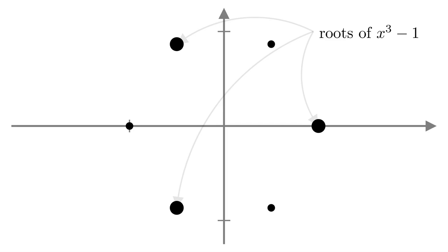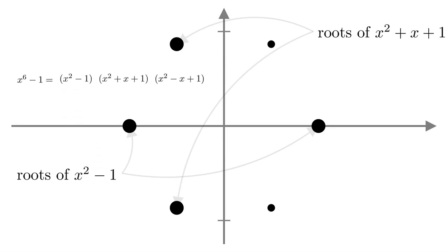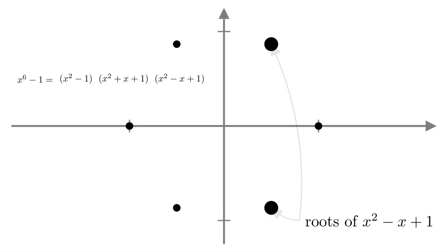One of those roots is 1, since 1 cubed minus 1 is 0. If I divide x cubed minus 1 by x minus 1, I get x squared plus x plus 1. The two roots of x squared plus x plus 1 are the primitive third roots of unity. These account for four of the six roots of x to the 6 minus 1. So x to the 6 minus 1 factors as x squared minus 1 times x squared plus x plus 1 times x squared minus x plus 1. The two roots of x squared minus x plus 1 are the primitive sixth roots of unity.